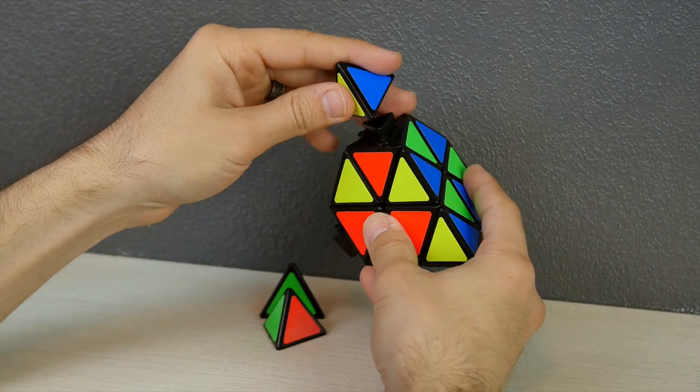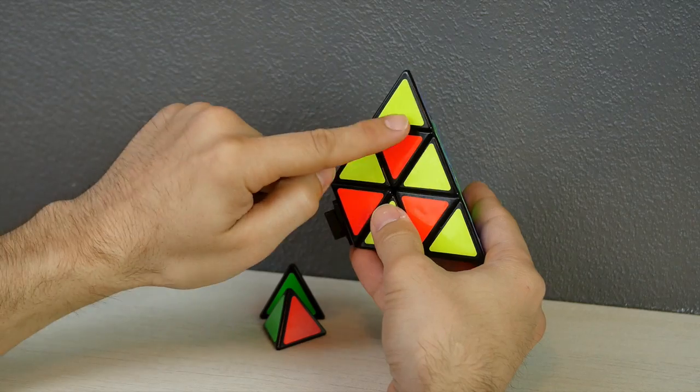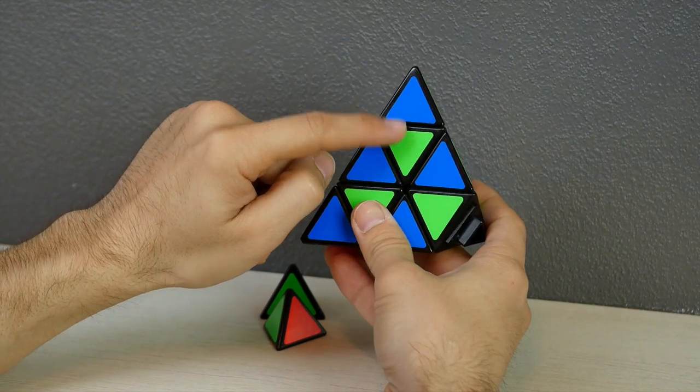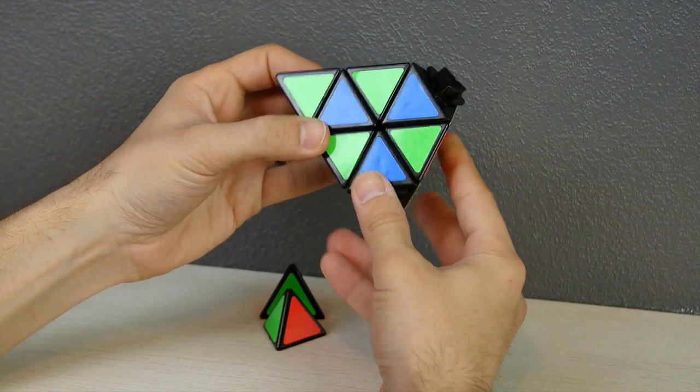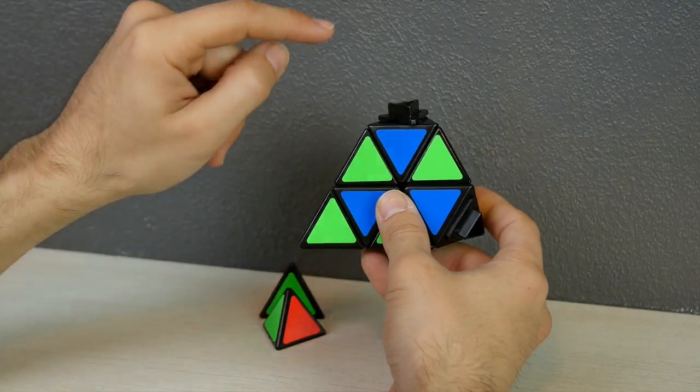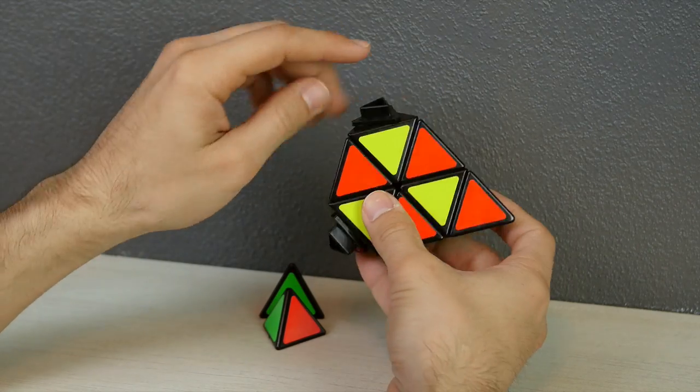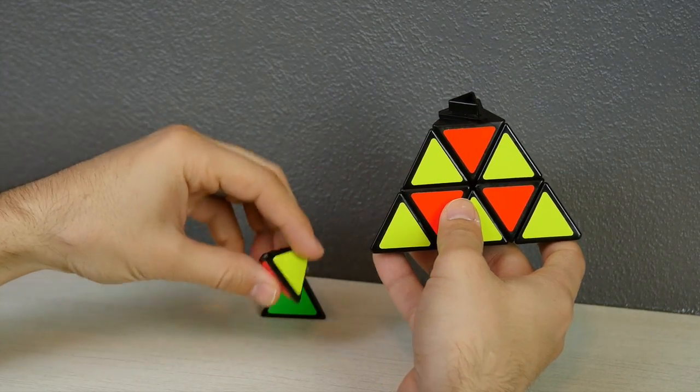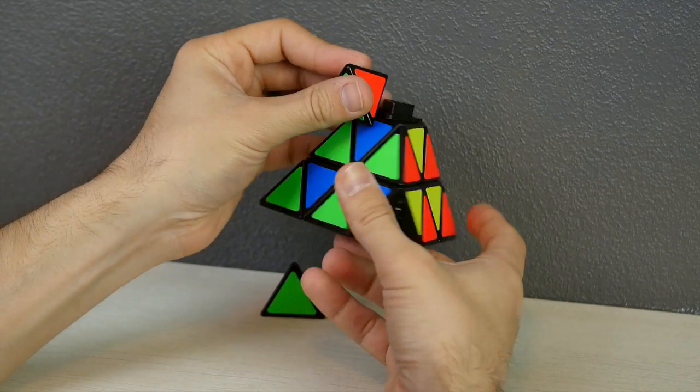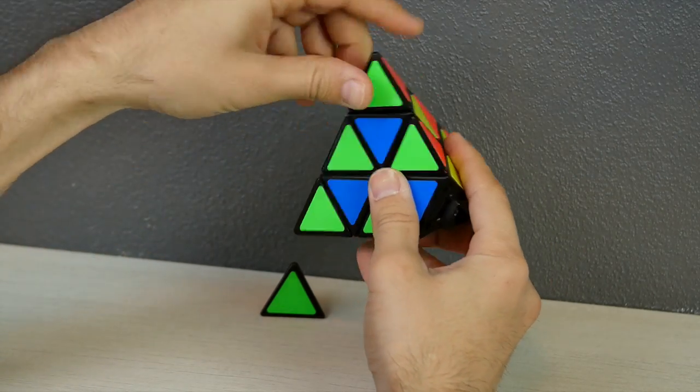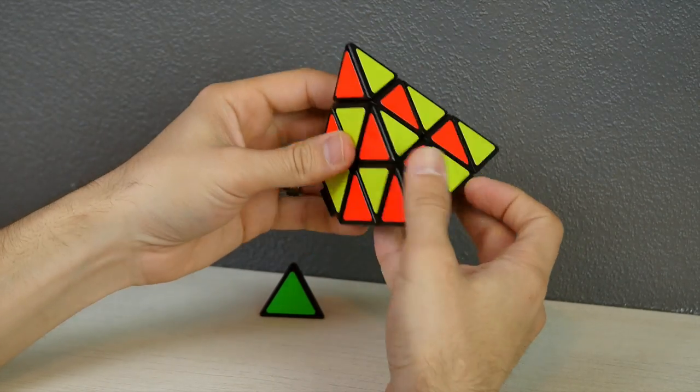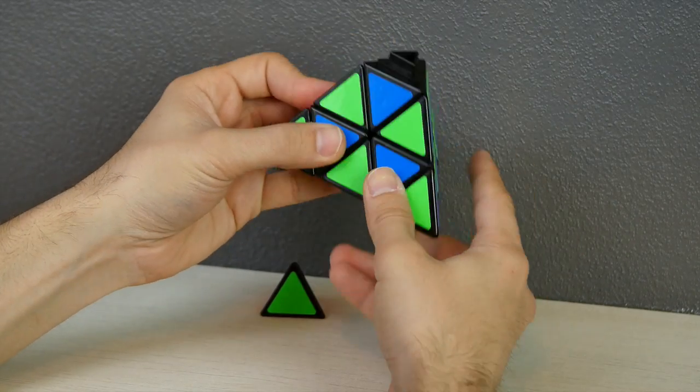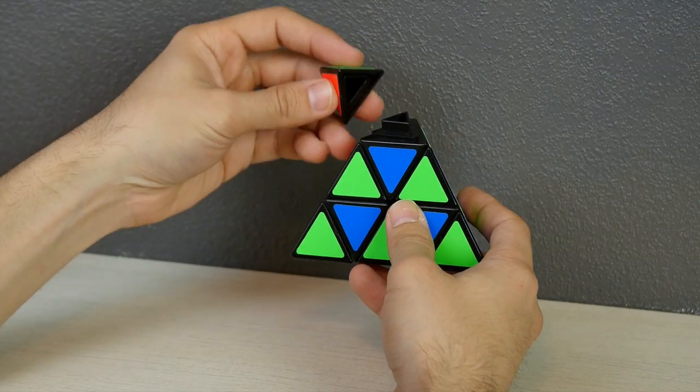Now let's go to a different corner. We need green, red, and yellow. Green, red, yellow. And here it is. Green, red, yellow. And one more corner. Obviously it's the last piece.